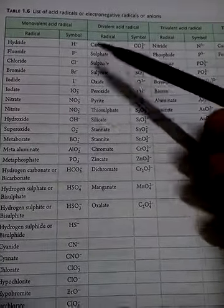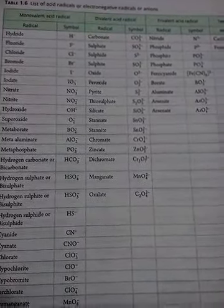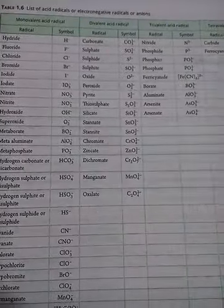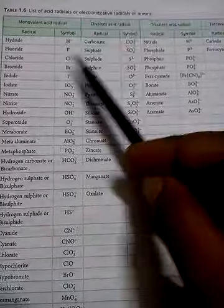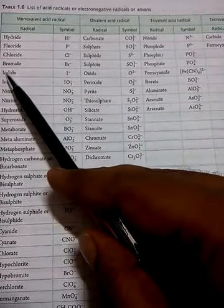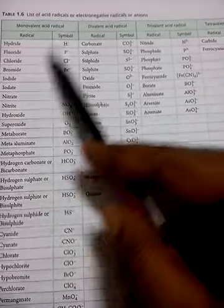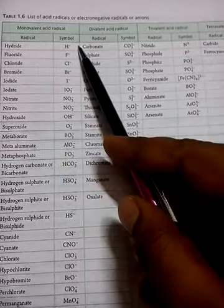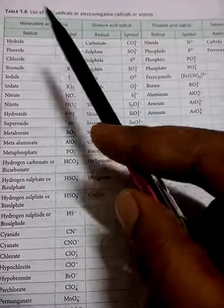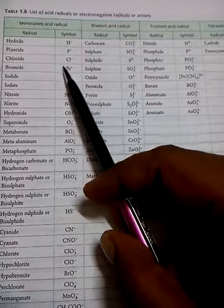I suggest you should learn these by heart. You have to write and practice both the formula, symbols, and the name — both are important in writing a chemical formula. Both you have to learn by heart.